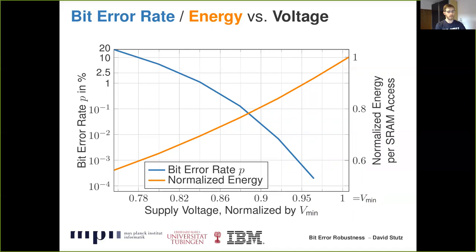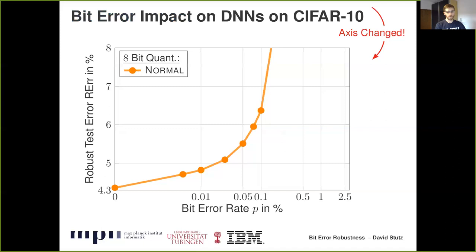In fact, it can be shown that the bit error rate increases exponentially, as shown in blue — note the left axis is in log scale. The DNN must therefore endure exponentially increasing rates of bit errors to reduce voltage and energy consumption. Unfortunately, this results in a significant drop in accuracy. We show the robust test error — computed after injecting bit errors into the weights — where it increases very quickly even for very small bit error rates for an 8-bit quantized normally trained model on CIFAR-10.